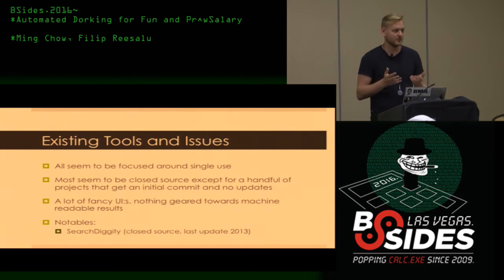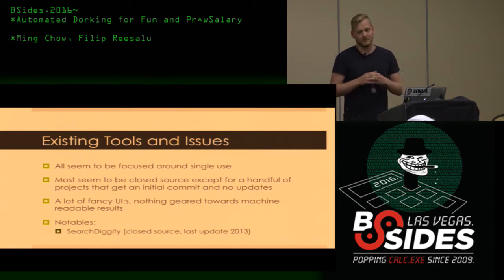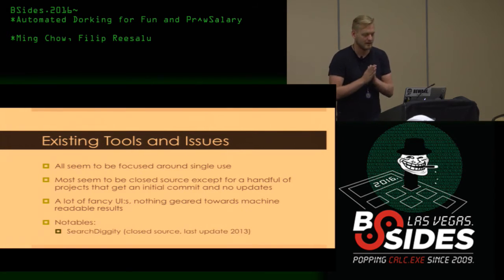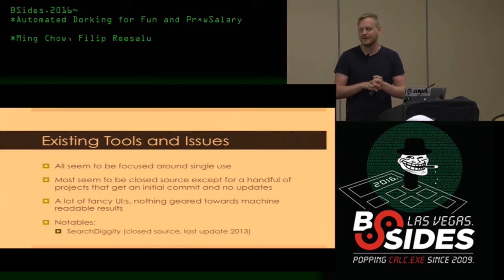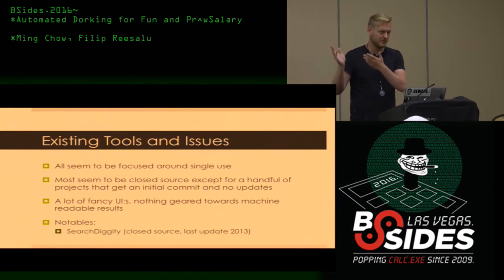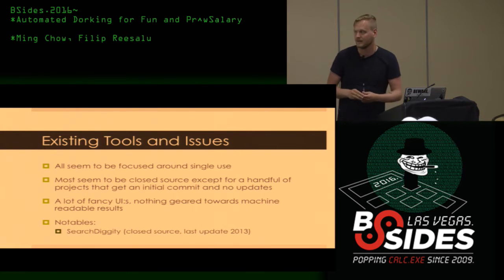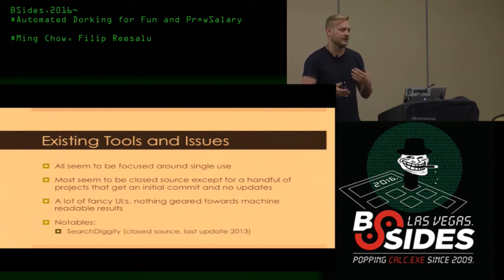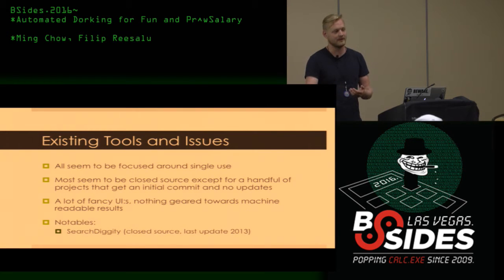Looking at some existing tools — they all seem to be focused around single use, there are a lot of pretty UIs, and most projects are dead. What I wanted was machine-readable results that I can set up alerts on. For example, I want to be alerted whenever a certain domain pops up in one of these dorks, which means something is going on for a specific company. Notable here is Searchdiggity — they have a very nice website with a lot of good information, but the last updates I can see were from 2013.